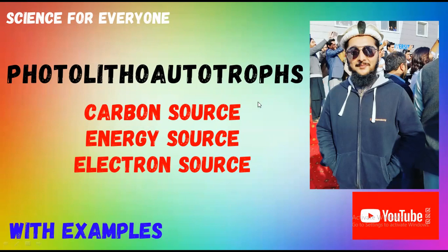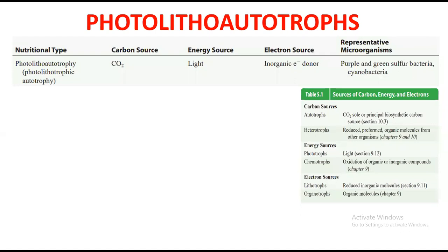I discussed the chemo organo heterotroph in the previous video, and this is the second part of that series. Today we will discuss the photolitho autotrophs. These are a group of microorganisms that use different nutrients as their carbon source, energy source, and electron source. Just because of these three sources, these microorganisms get their name as the photolitho autotroph.